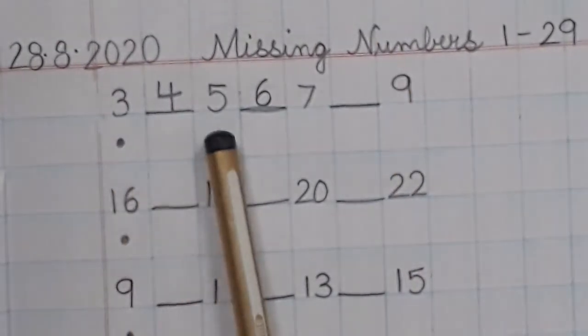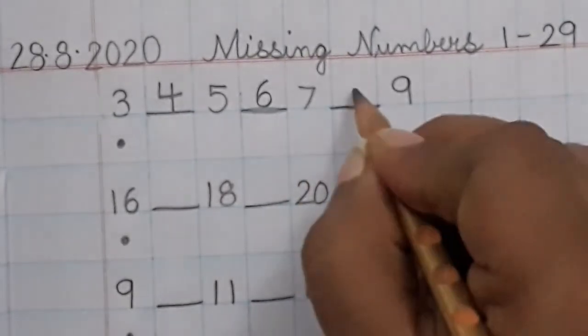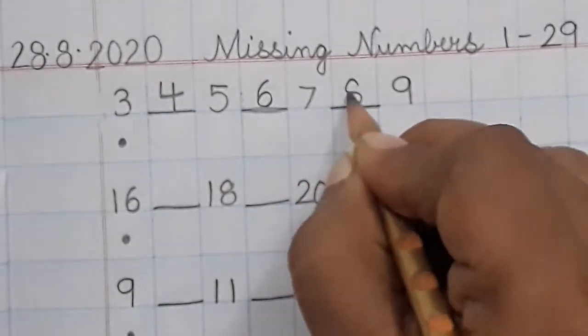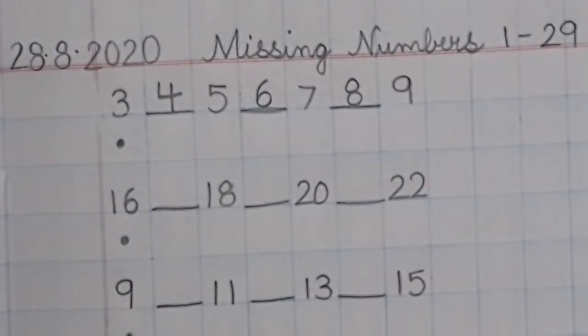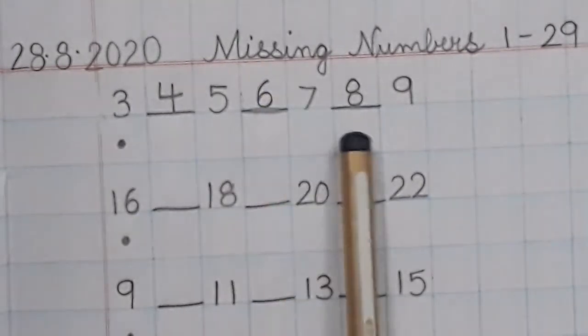3, 4, 5, 6, 7, 8. Very good. So you've completed the number order by writing the missing numbers.